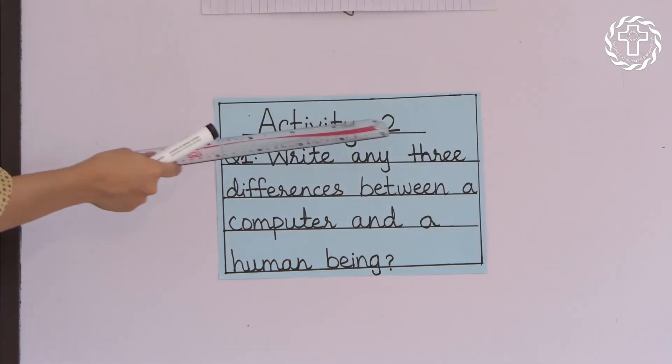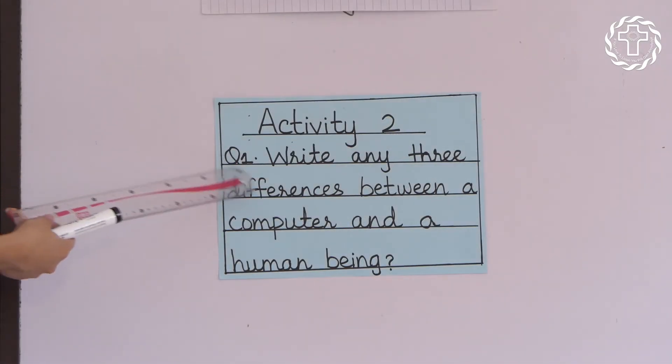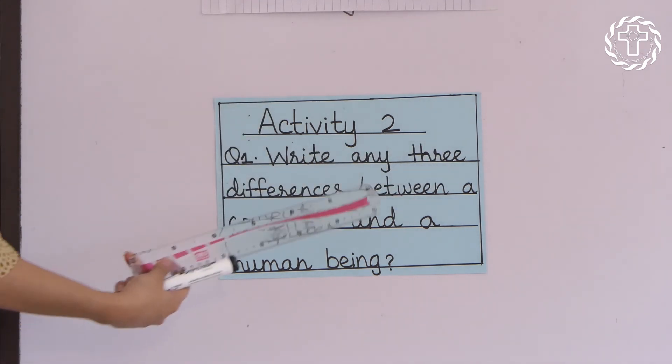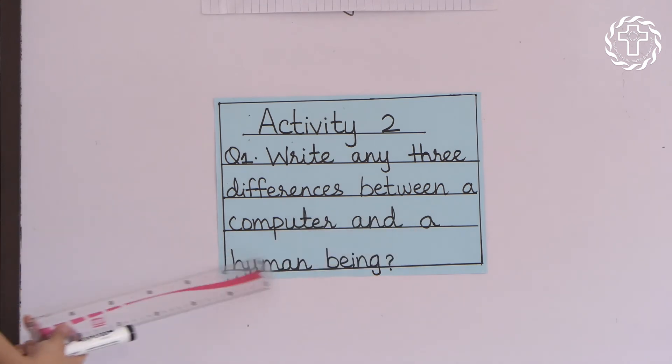Activity number two, question number one. You have to do it in your home book copies. Write any three differences between a computer and a human being.